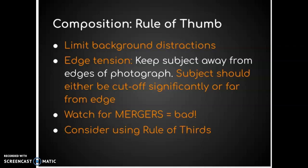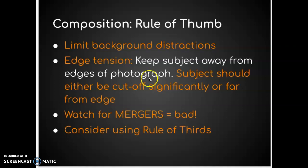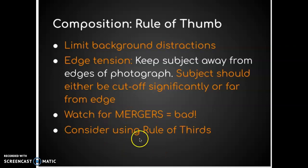A couple things with composition. First, limit the background distractions — that is the attribute of clear subject. Get rid of all the distractions and really think about what you want your viewers to look at. When we talk about edge tension, keep subjects away from the edges of the photograph. Subjects should be either cut off significantly or far away from the edge. Watch for mergers — mergers are bad. And consider using the rule of thirds, which you can enable as a grid setting on your phone camera or use in Photoshop.